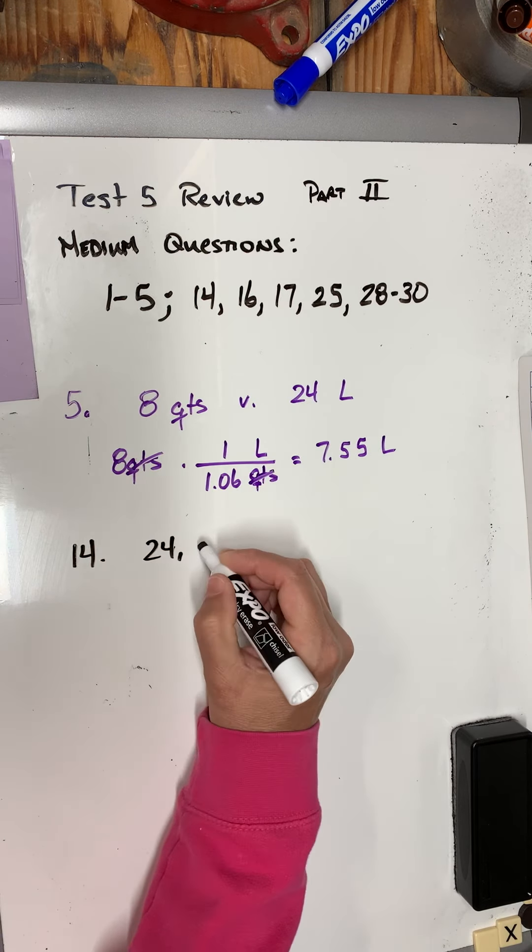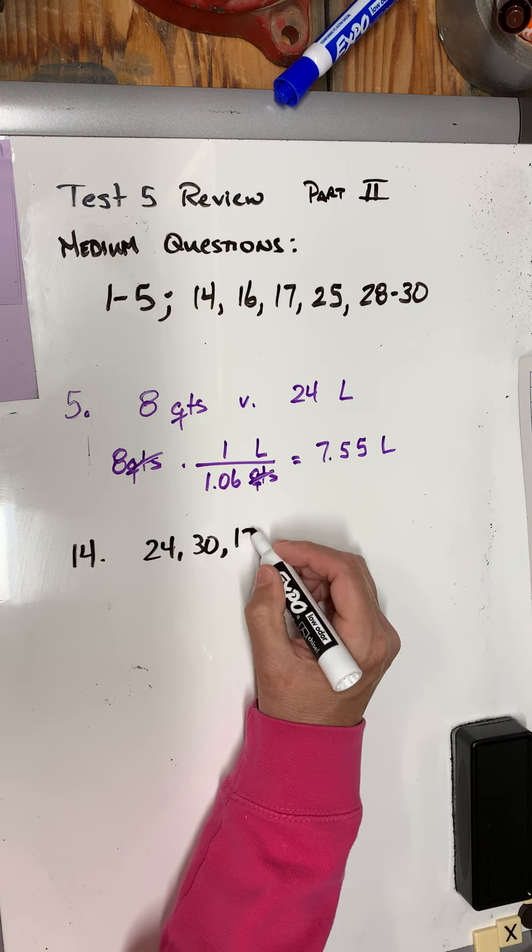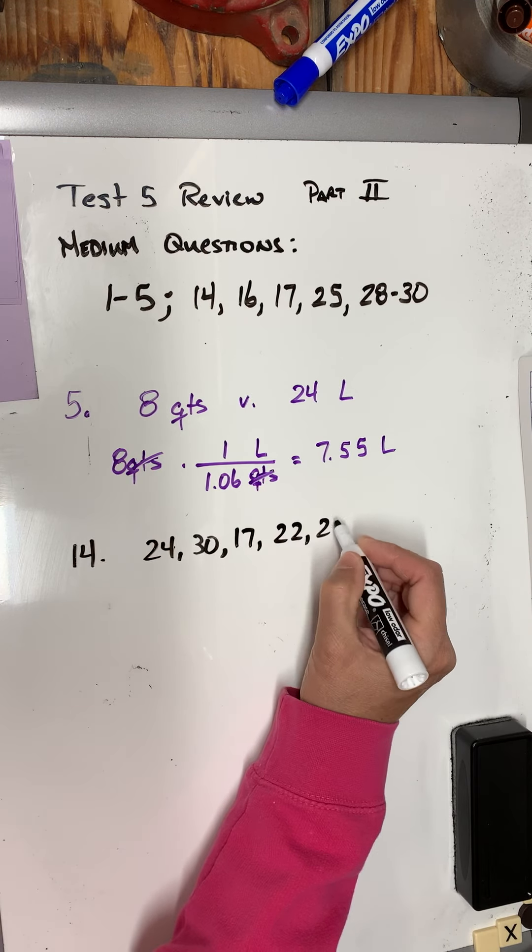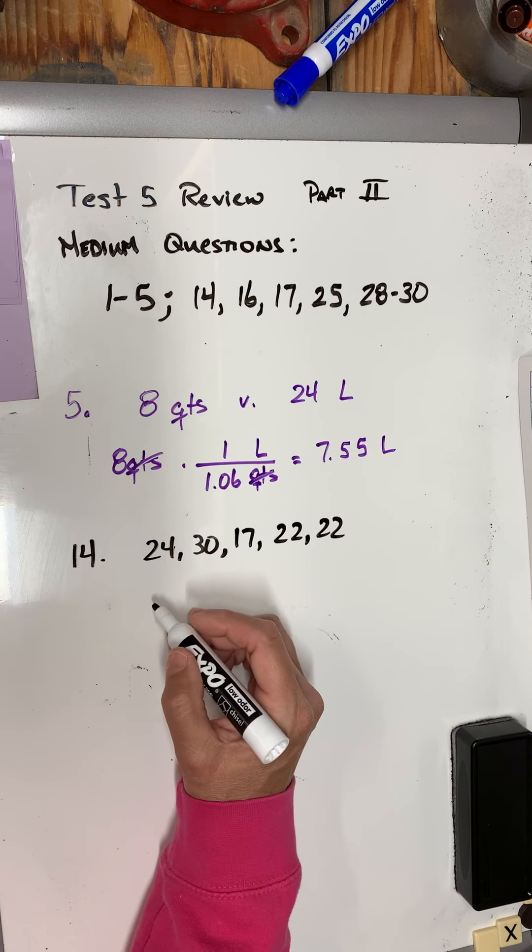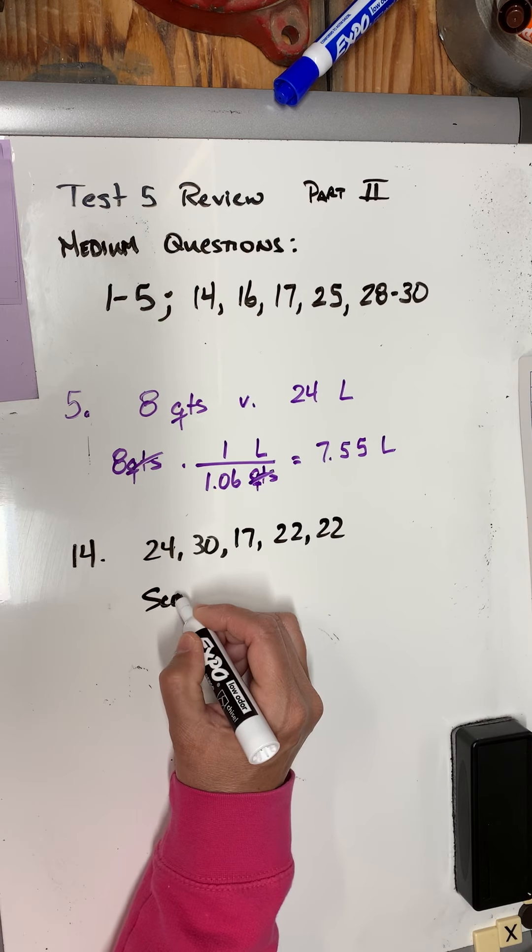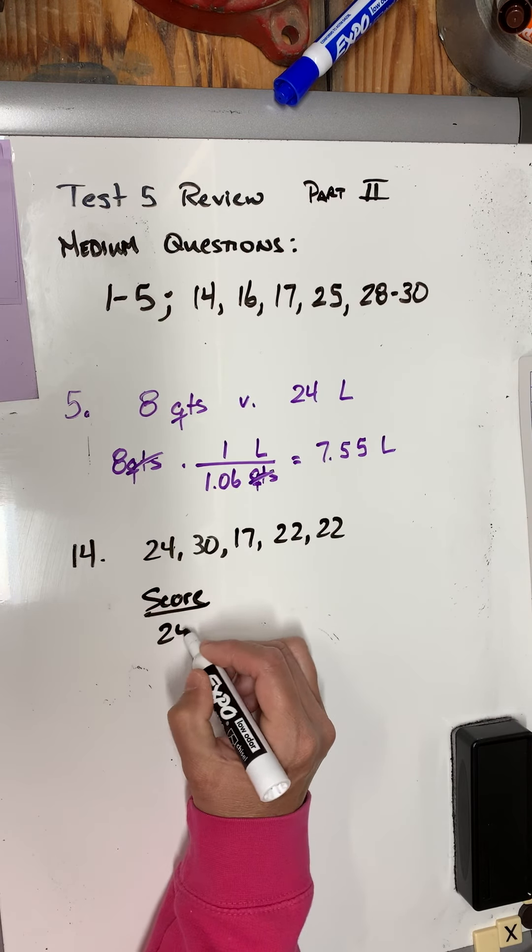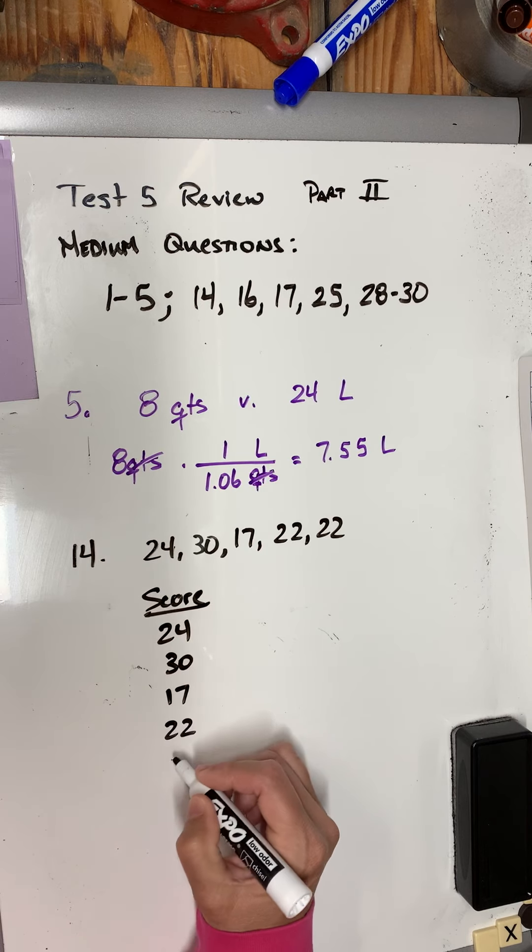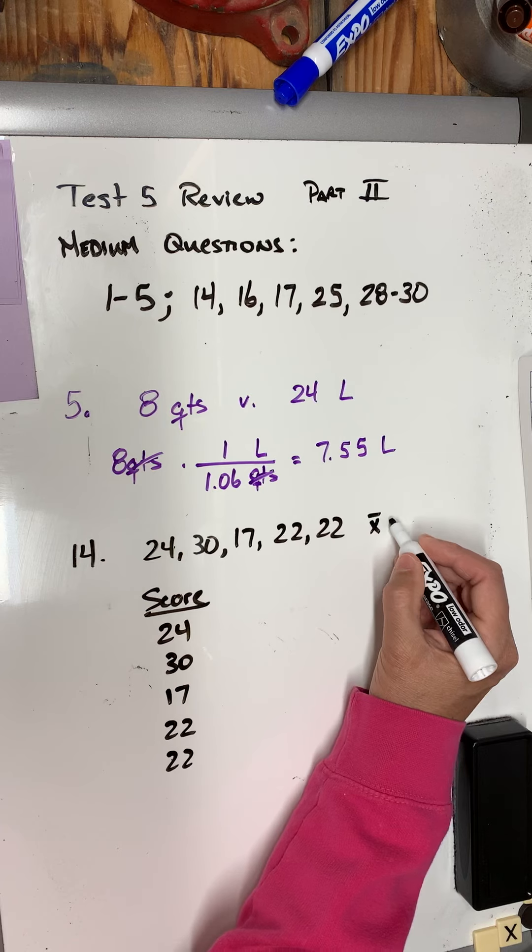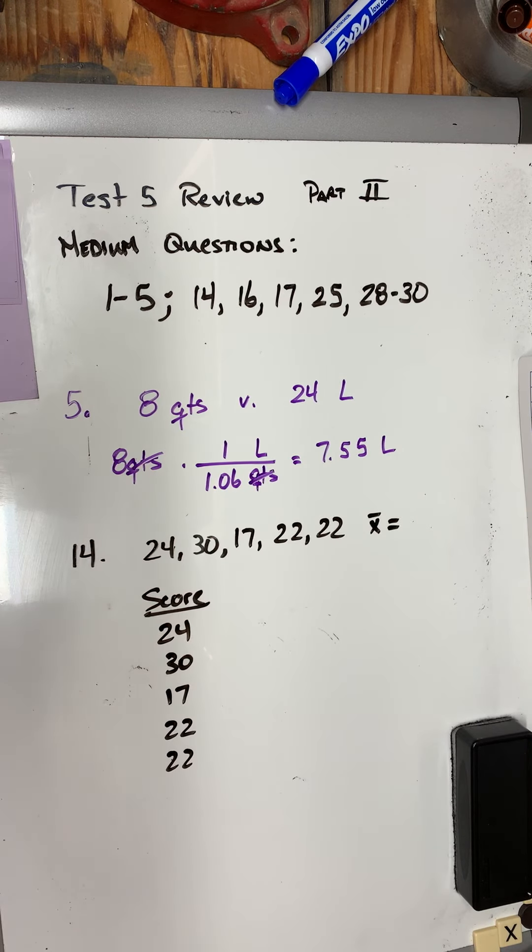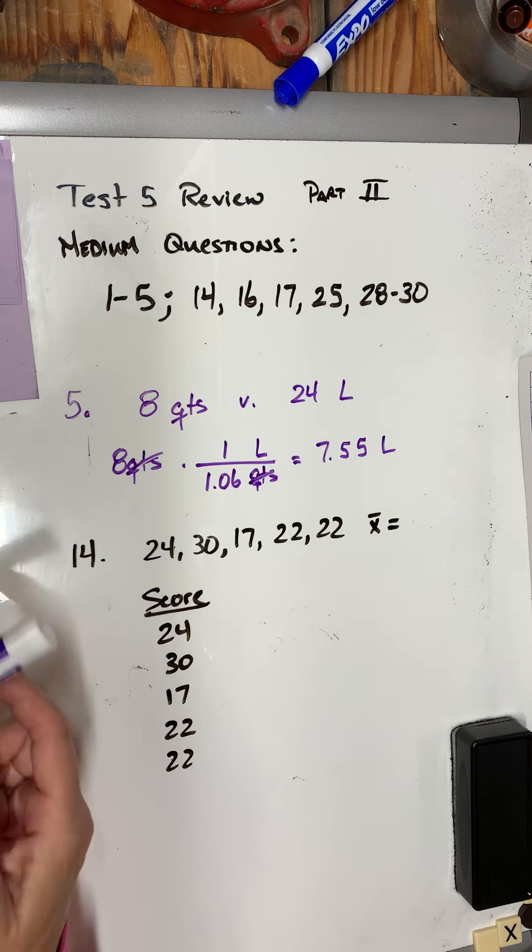What they want me to do is find the deviations from the mean for the set of data. So I've got 24, 30, 17, 22, and 22. They want me to give them the deviations from the mean, so they rewrote them vertically, which is fine: 30, 17, 22, 22. So the first thing I need to do is find the mean. So the mean, which I'm going to call x̄, equals those five numbers added up. So I'm going to go 24 plus 30 plus 17 plus 22 plus 22 divided by 5, which is 23. So the mean for this problem is 23.